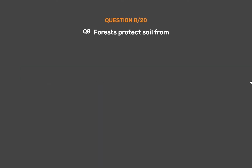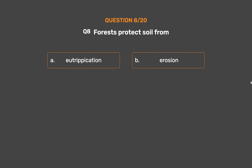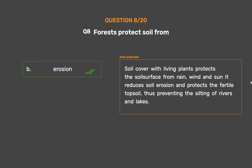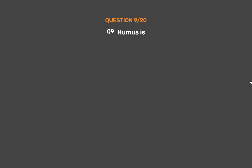Question number 8. Forests protect soil from. Option A: Eutrophication. Option B: Erosion. Option C: Both of these. Option D: None of these. The correct answer is Option B: Erosion. Soil cover with living plants protects the soil surface from rain, wind and sun. It reduces soil erosion and protects the fertile topsoil, thus preventing the silting of rivers and lakes.